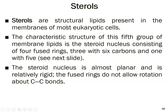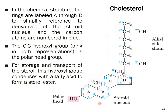Sterols are structural lipids present in the membranes of most eukaryotic cells. The characteristic structure of this fifth group of membrane lipids is the steroid nucleus, consisting of four fused rings — three with six carbons and one with five carbons. The steroid nucleus is almost planar and relatively rigid; the fused rings do not allow rotation about carbon-carbon bonds. In the chemical structure, the rings are labeled A through D, and the carbon atoms are numbered in blue from 1 to 27.